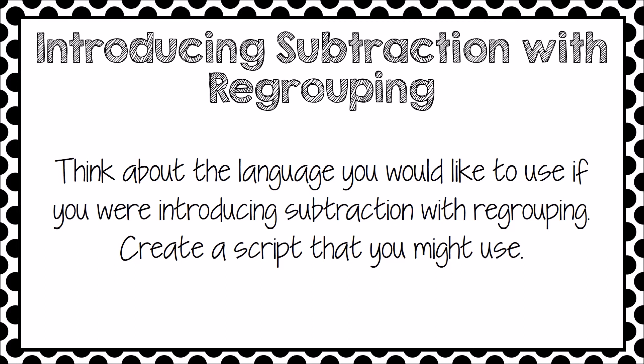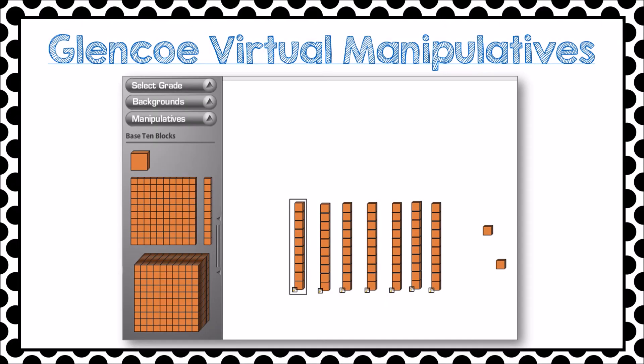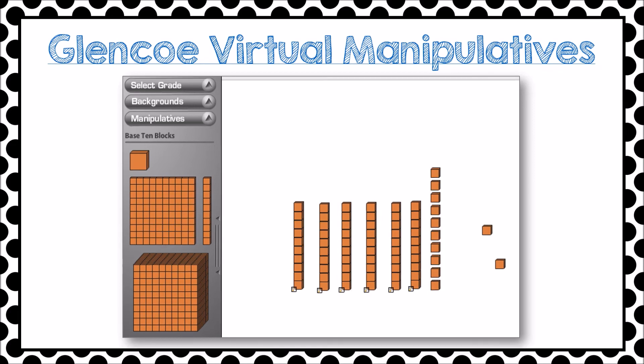Pause the video and jot down some notes or a script that you might use. One of my favorite ways to introduce subtraction with regrouping is to use Glencoe virtual manipulatives. If you Google 'Glencoe virtual manipulatives,' it will take you to this site. Click on the link for manipulatives in the drop-down box and click on base-10 blocks. Here you can represent any number — right now I've represented 72. When I'm ready to take away 25, I can break apart any one of those tens by clicking on that tiny little box at the bottom of one of those rods.